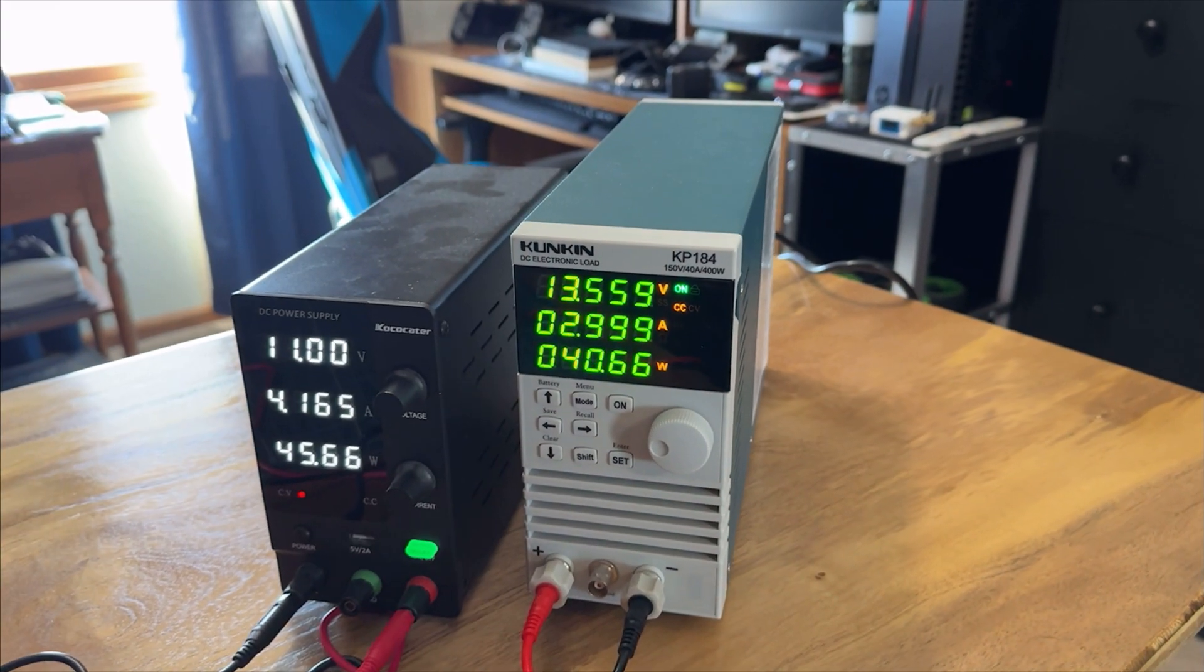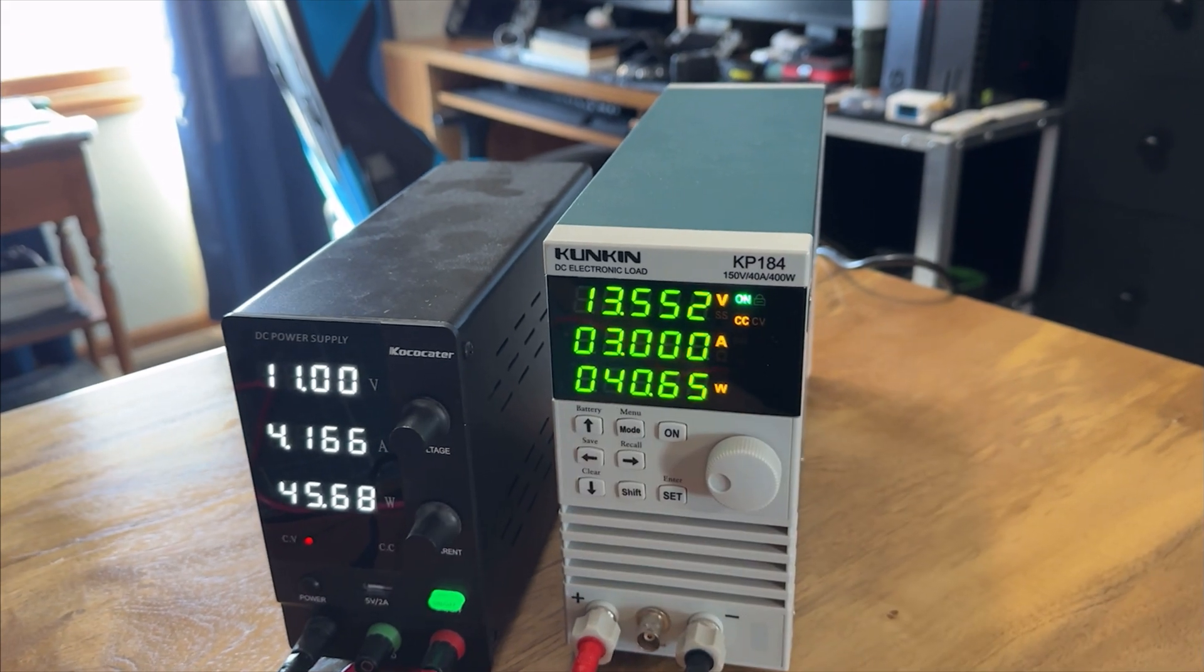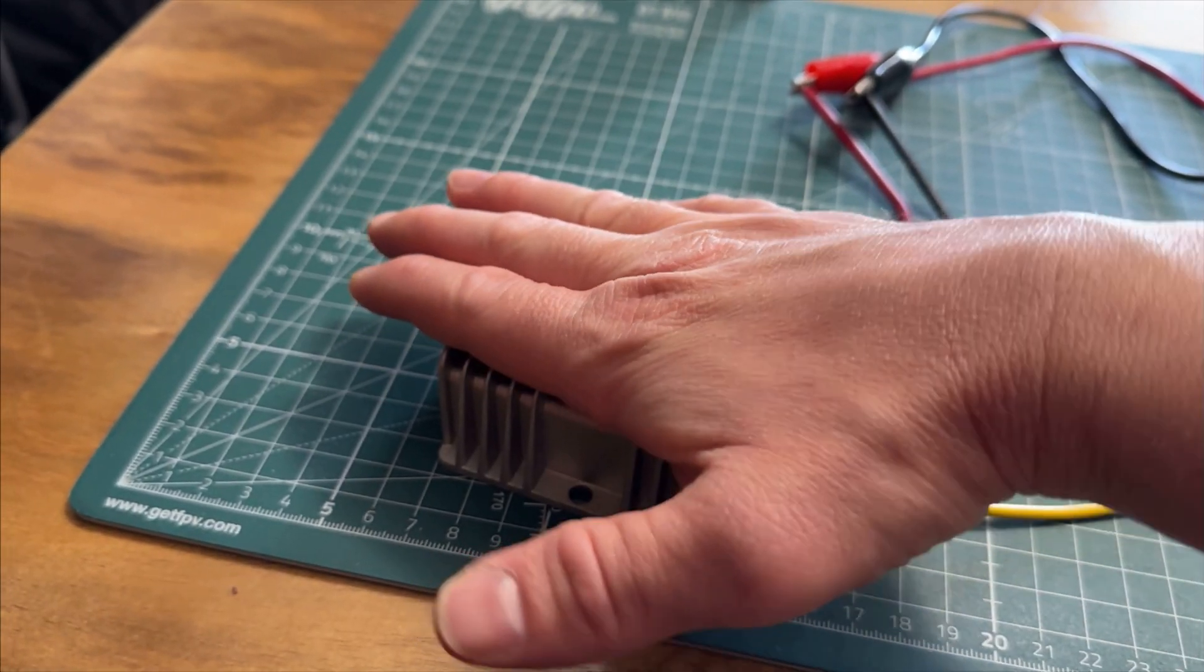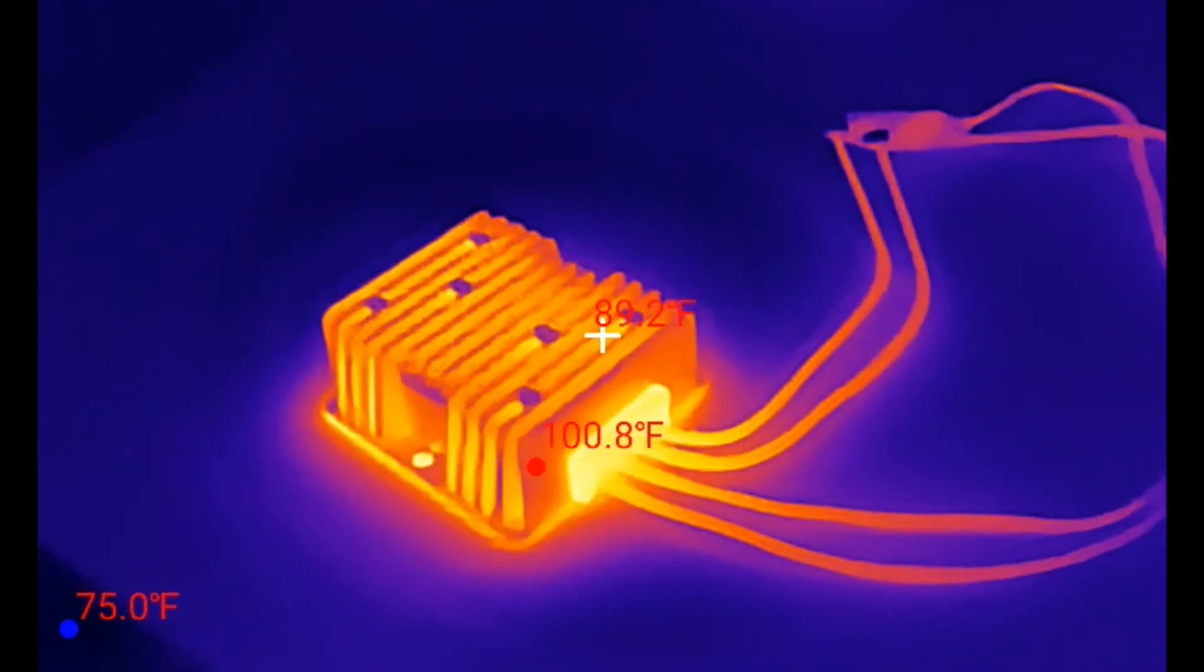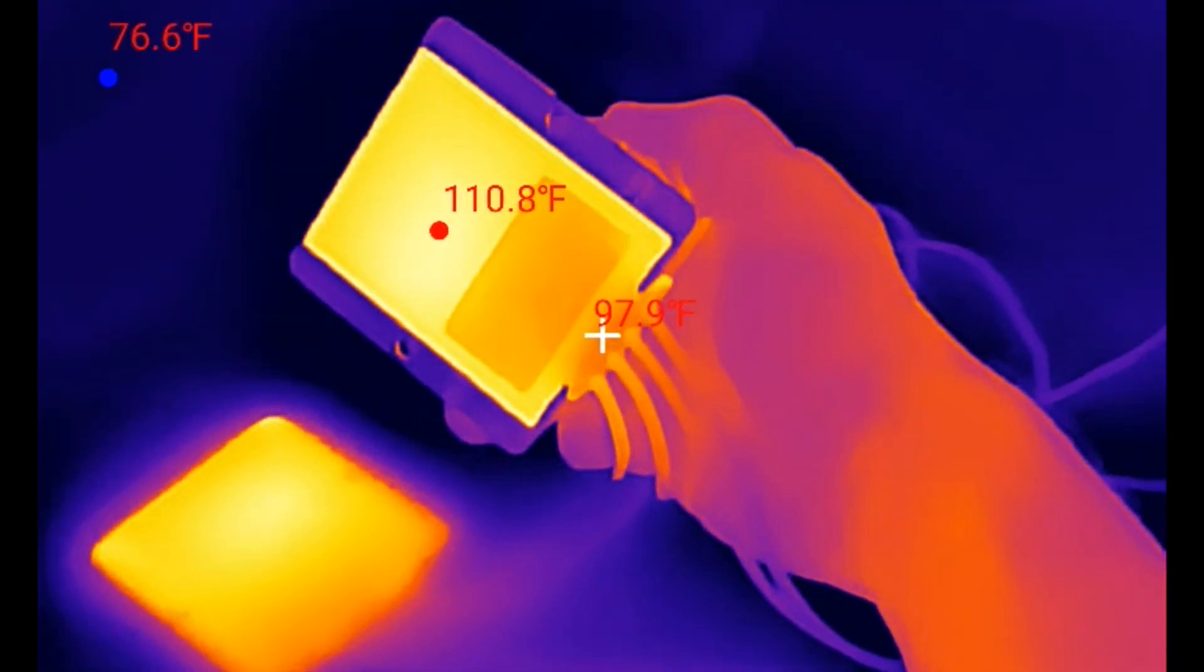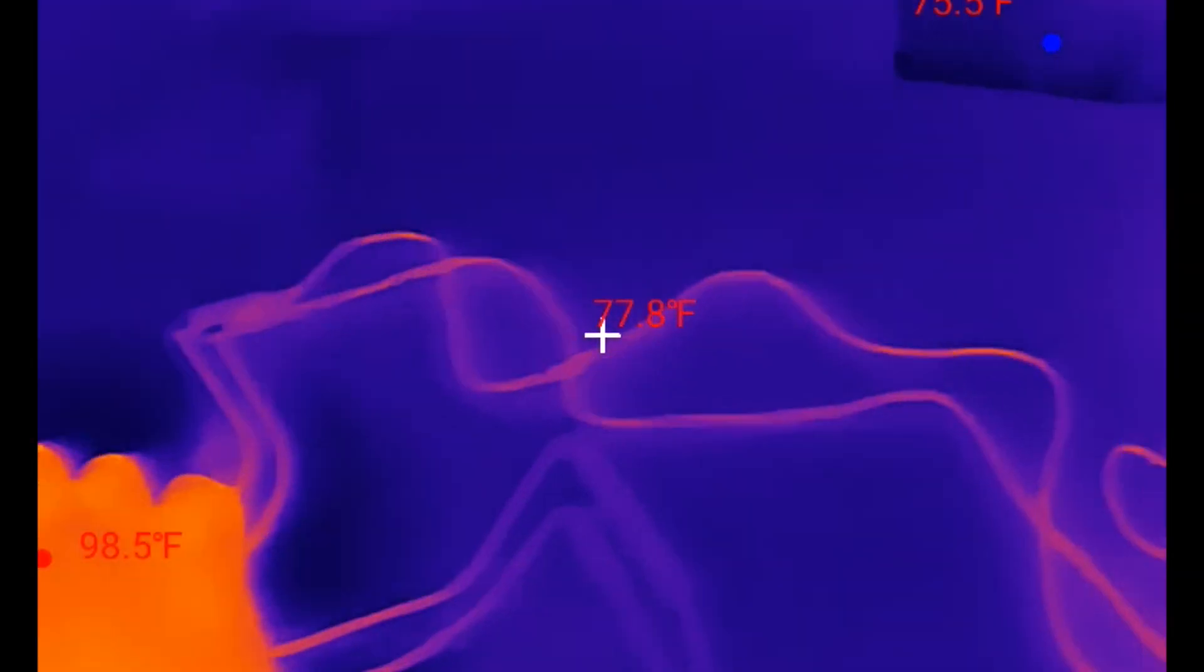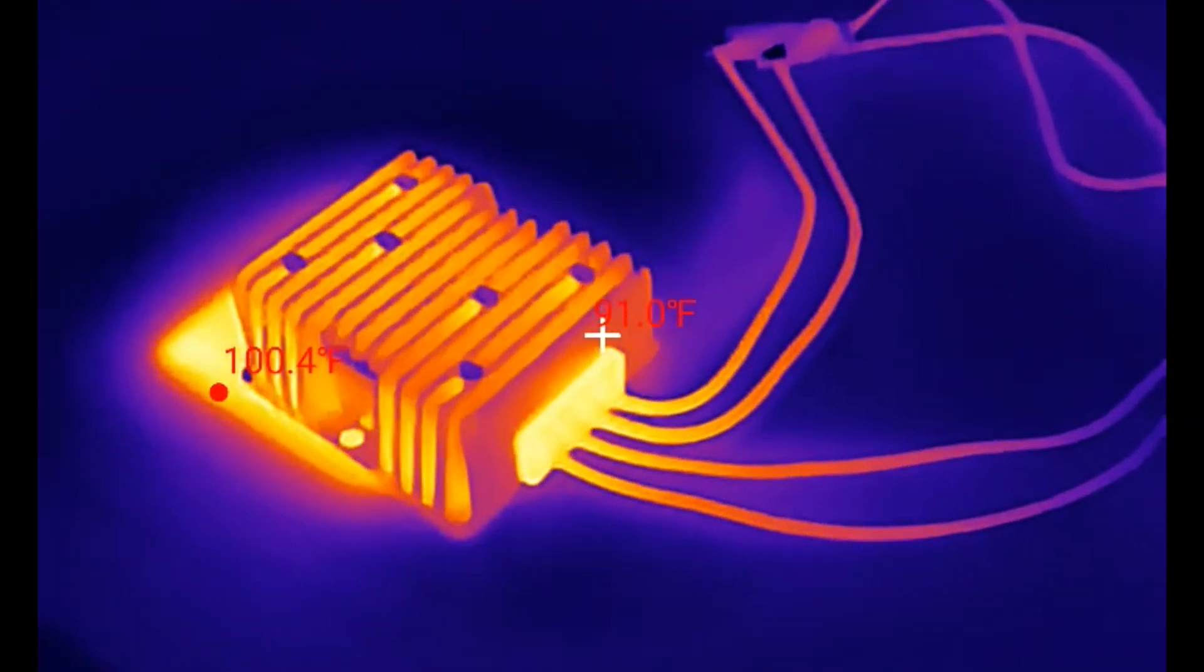All right so it's been running for well over an hour and we're still at a good 13.5 volts. Been sending 11 volts to it, pulling about 3 amps. And it's a little toasty but I can keep my hand on it without burning myself. Here it is on the thermal imager. The hottest point is 100 degrees. Take a look underneath. A little hotter, about 112. And we're only at 3 amps. So I mean if you're running 10 amps through this thing it might get pretty toasty.